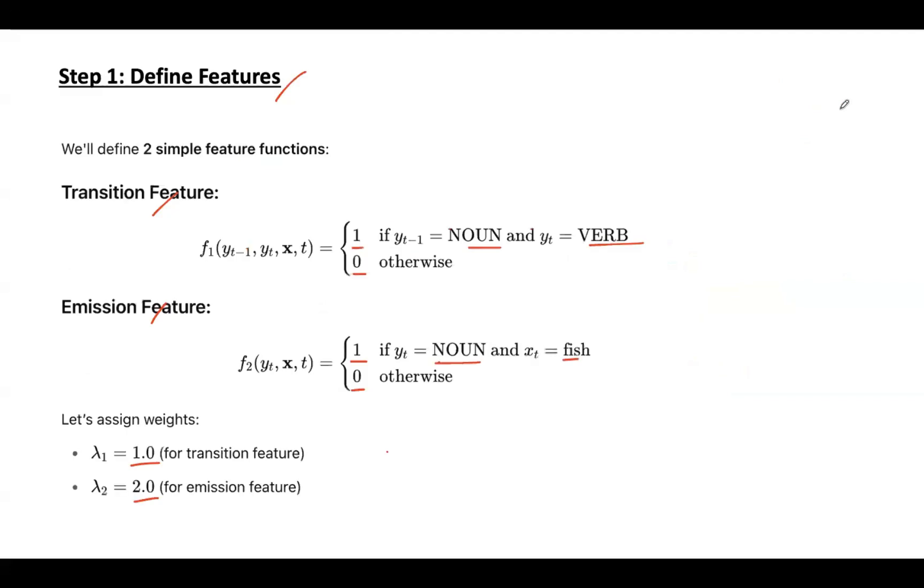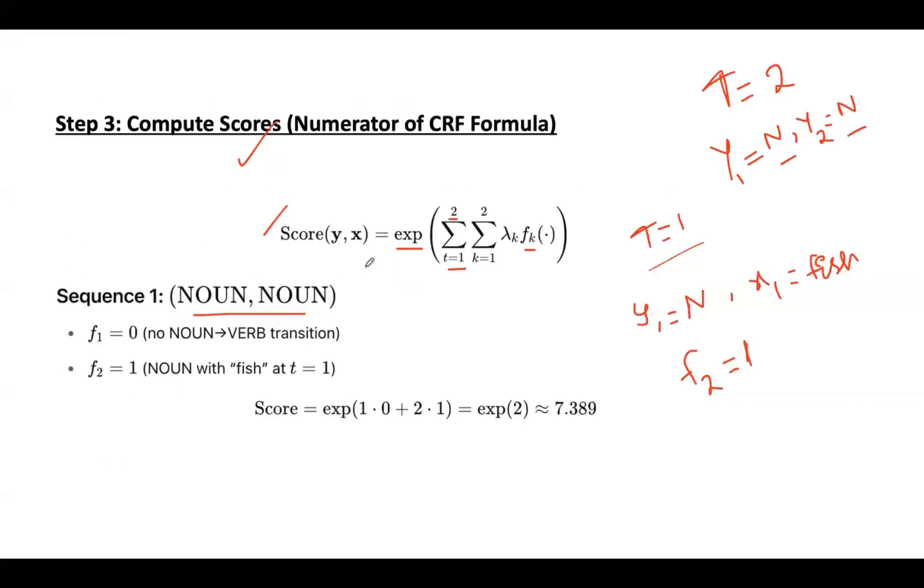But according to our f1, there should be noun to verb transition. Then only f1 fires and value becomes 1. As we have noun to noun sequence, this f1 value remains 0. f1 remains 0 as there is no noun to verb transition. And this f2 value will be 1 because there is a noun with fish combination at time step t equal to 1.